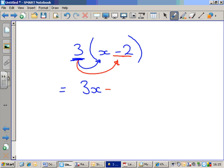So, three times minus two is negative six. There it is. That, in a nutshell, is multiplying out brackets.